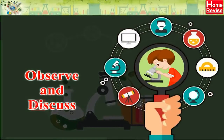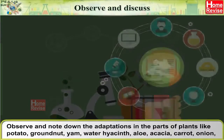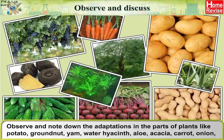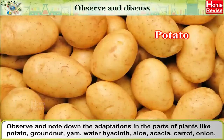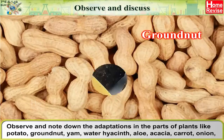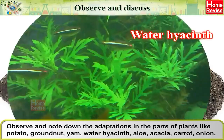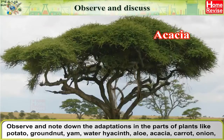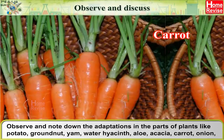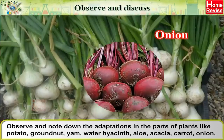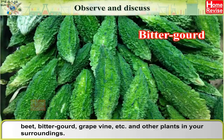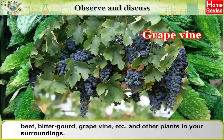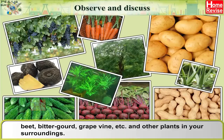Observe and discuss: Note down the adaptations in parts of plants like potato, groundnut, yam, water hyacinth, aloe, acacia, carrot, onion, beet, bitter gourd, grapevine, and other plants in your surroundings.